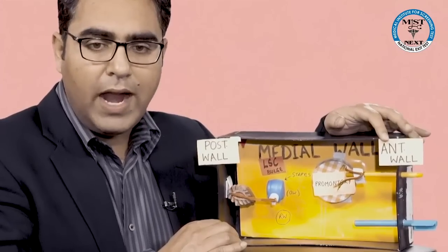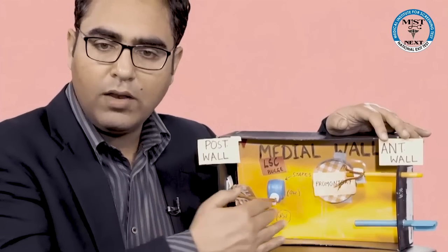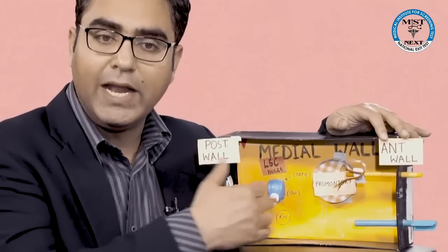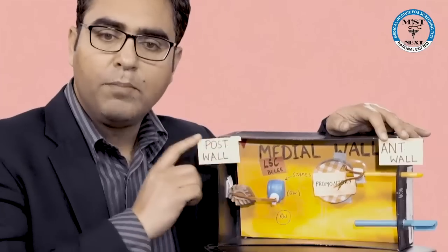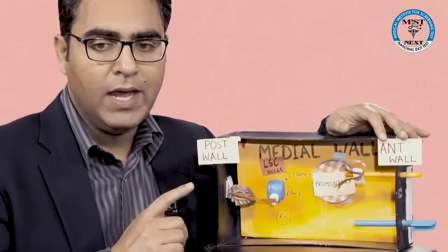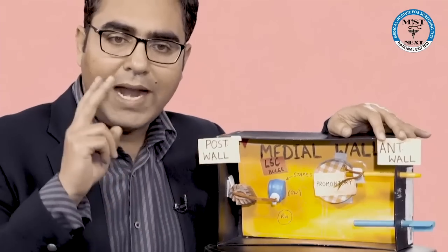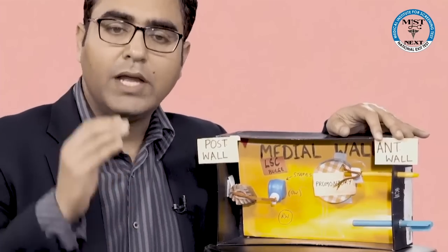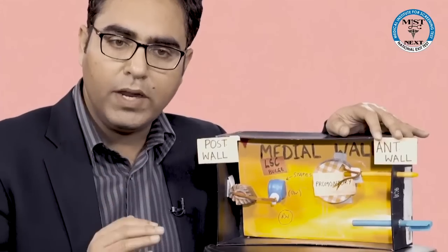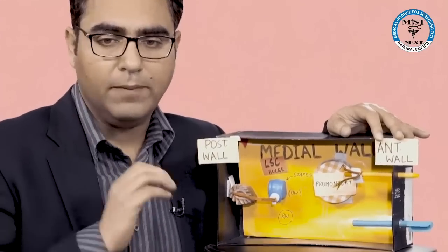Now this marking is the anterior wall and this marking is the posterior wall. Let's focus on the anterior wall and posterior wall. The yellow wall at the floor is the medial wall — we'll do that later. Please focus fully on the anterior wall. The anterior wall has got two openings: the lower opening is for the Eustachian tube and the upper opening is for the canal for tensor tympani muscle.